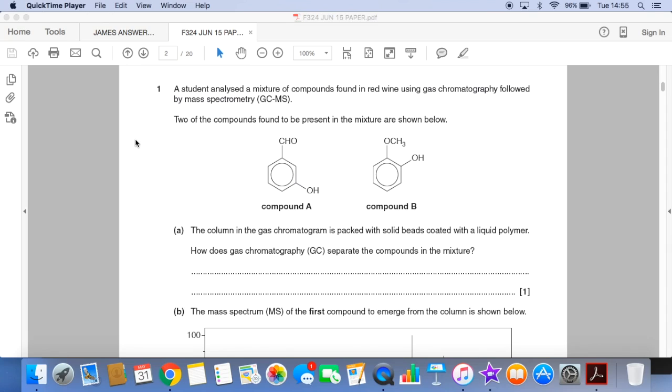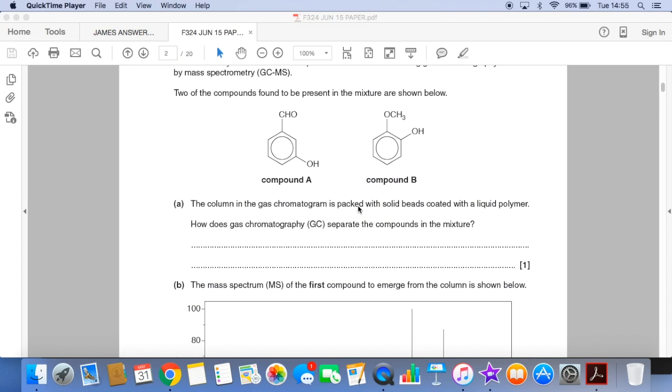So first part of the question, students analyze the mixture of compounds in red wine using gas chromatography followed by mass spec and there's two compounds present. And then quick question, how does gas chromatography separate the compounds in the mixture?